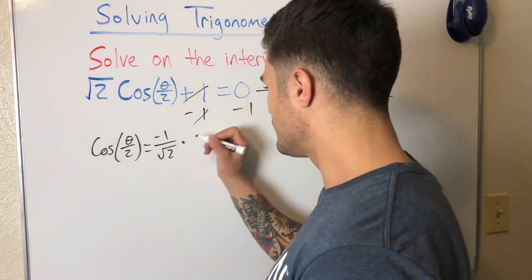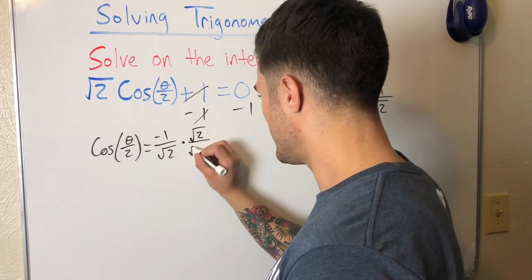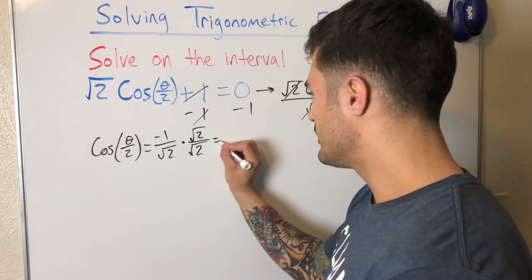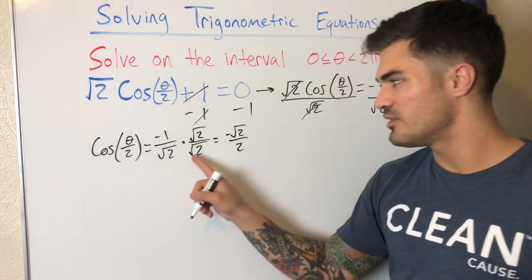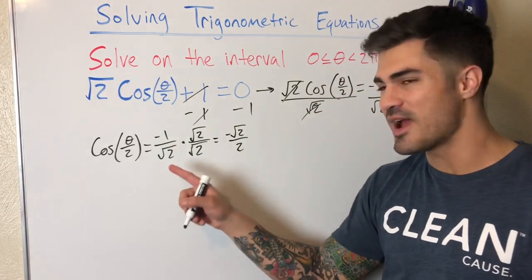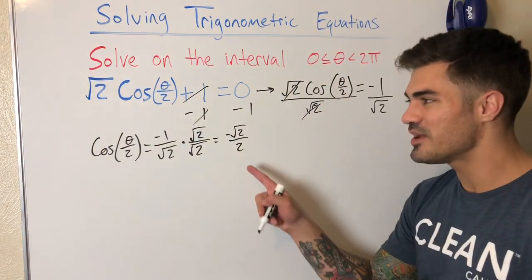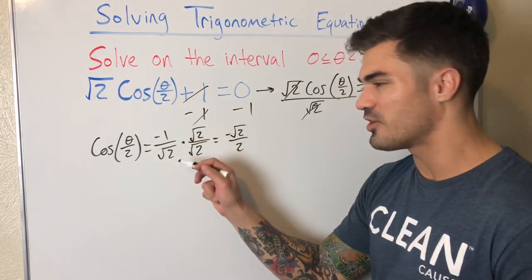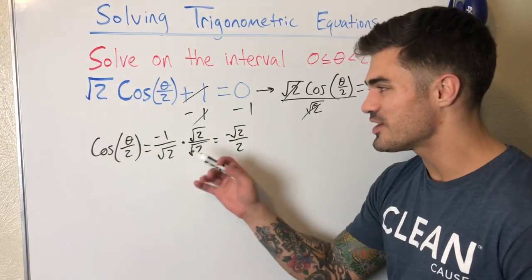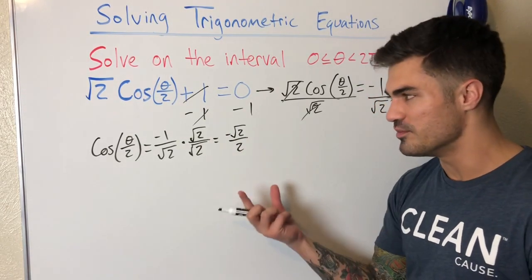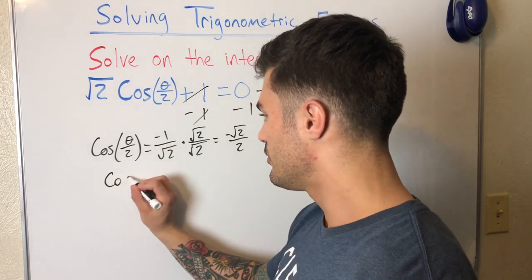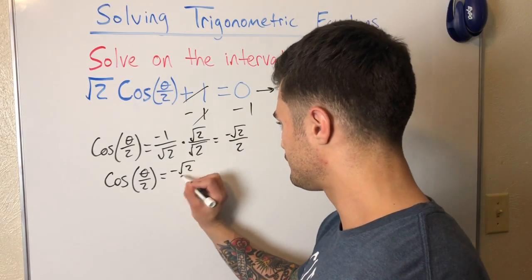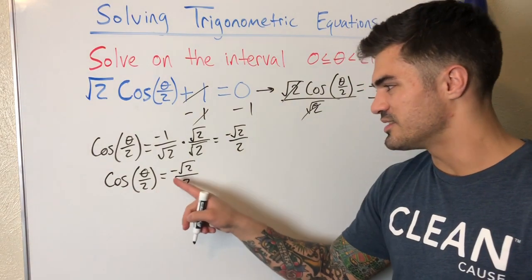This might not look very familiar, but if we rationalize the denominator by multiplying by √2/√2, we get negative √2/2, since √2 times √2 is just 2. That gets rid of the radical in the denominator. Now we have something that looks familiar from the unit circle: cosine(θ/2) = −√2/2.